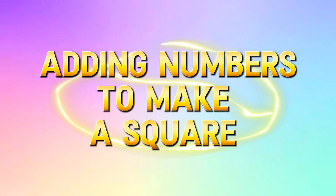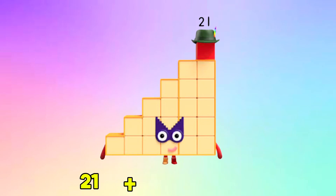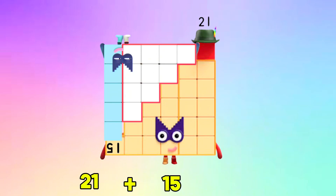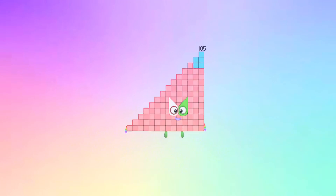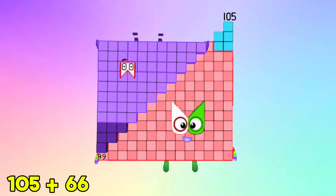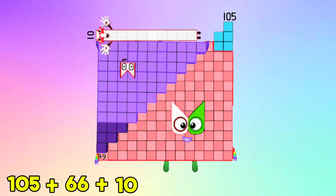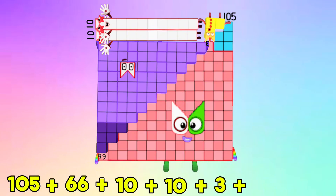Adding numbers to make a square. Let's go! 21 plus 15 is equals to 36. 105 plus 66 plus 10 plus 10 plus 10 plus 3 plus...